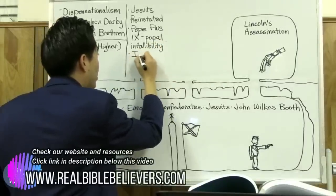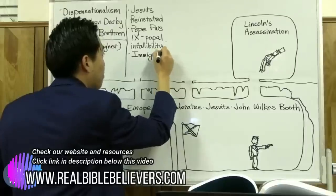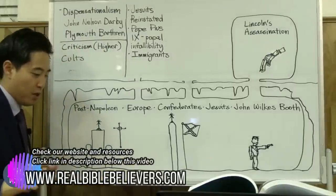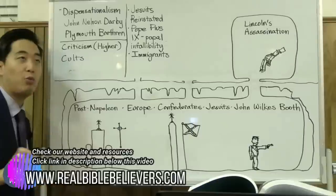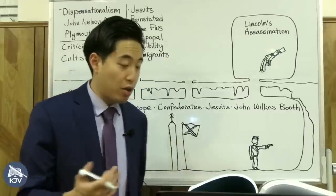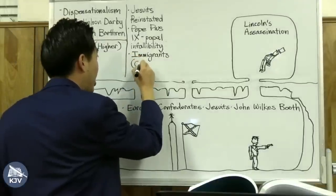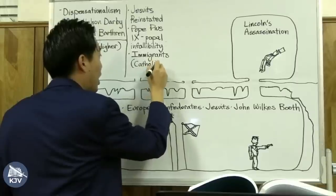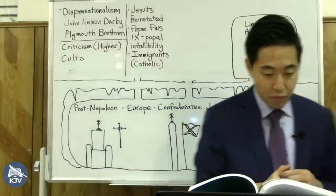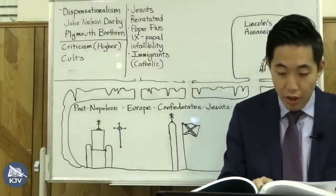Thomas Jefferson warned a long time ago that immigrants were going to bring their Catholic ideology into America and change what we worked so hard to create — this biblical, moral, independent nation. And it turned out to be true. Pope Pius IX flooded America with so many Catholic immigrants that it changed the landscape. Maryland and Delaware were dominated by Catholic influence.